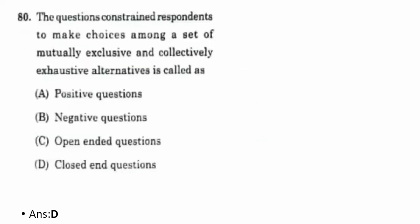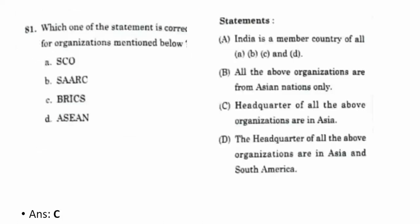Eightieth question: a question that constrains respondents to choose among a set of mutually exclusive and collectively exhaustive alternatives is called D — closed-ended questions. Eighty-first question: which statement is correct for SCO, SAARC, BRICS, and ASEAN? The correct option is C — headquarters of all the above organizations are associated in Asia.